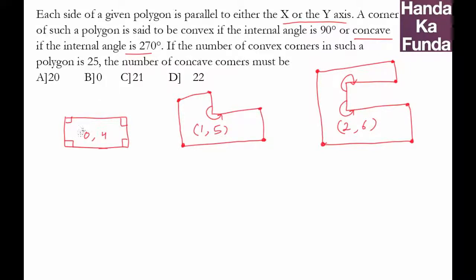Do you notice a pattern here? What is happening? Well, the gap between the two of them, the number of concave angles and convex angles or concave corners and convex corners, is four. Zero, four, one, five, two, six. Because every time I'm adding a concave angle,